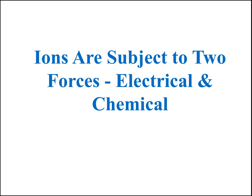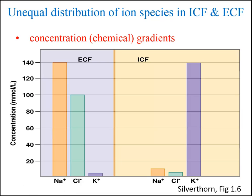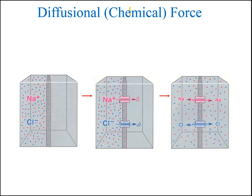Ions are subject to two forces which influence the direction and the magnitude of flux, or flow, of the ions. The first is the diffusional or chemical force, which is the driving force acting on ions due to differences in relative concentrations of ions across the membrane. No ion species is distributed equally on the two sides of the membrane. For example, sodium and chloride are more concentrated in the extracellular fluid, while potassium is more concentrated in the intracellular fluid. Ions want to flow down their concentration gradients to reach equilibrium — this is the basis for the diffusional force.